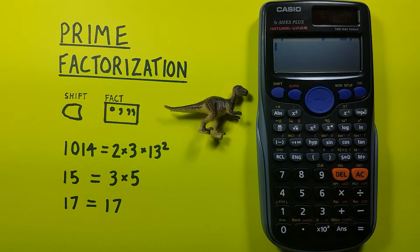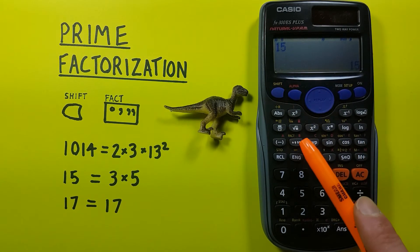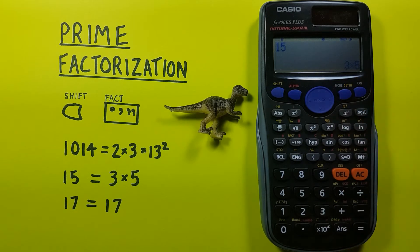We can try another number, let's say 15. Again, placing it on the screen, pressing equals, and then shift degrees minute seconds, and we can see that 3 and 5 are the prime factors.